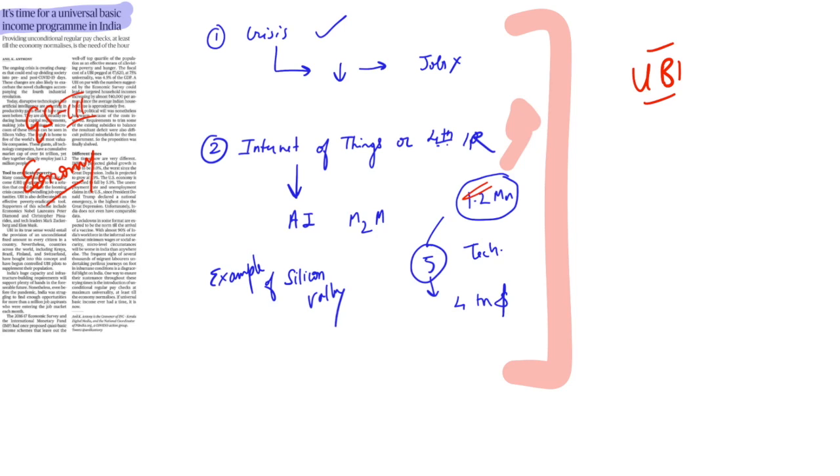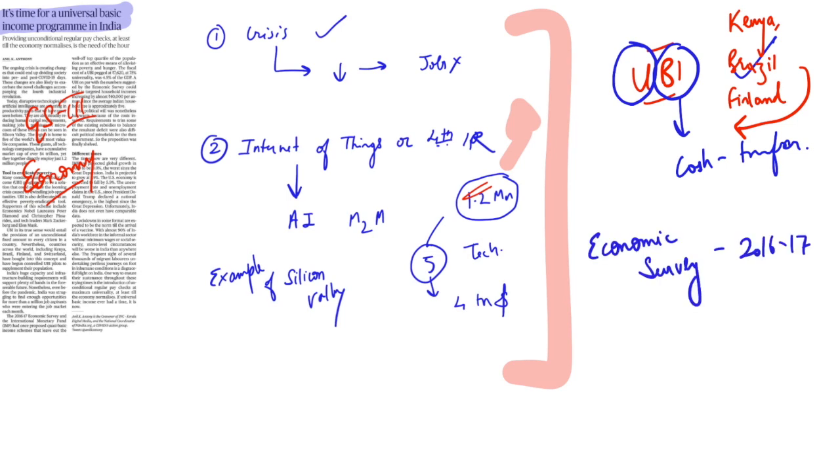So in this background we are talking about that it is high time we should bring the universal basic income. First of all universal means that it will be given to everybody irrespective of their status. Basic income means that some cash transfer will be given. Now what could be this cash transfer? It can depend on the country to country on the fiscal capacity of every government. The universal basic income has been experimented by various countries for example Kenya, Brazil, Finland they have experimented with this particular thing.